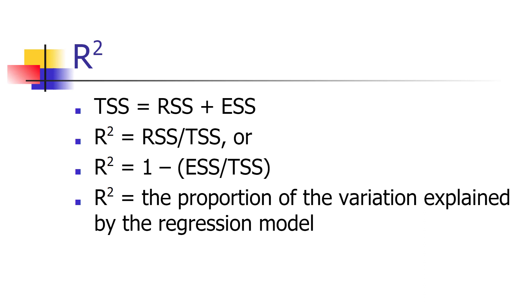In general, it's simplest to think of R-squared as the proportion of the variation in the dependent variable that can be explained by the regression model.